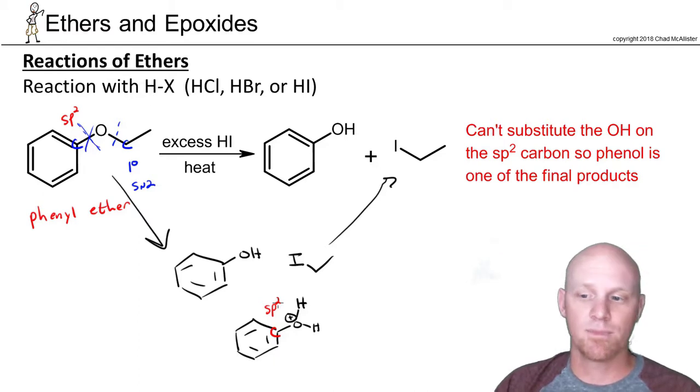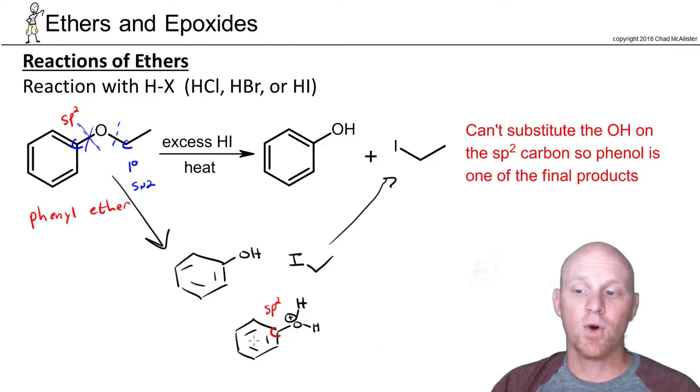And then backside attack is completely blocked from the reverse by the pi electrons in the benzene ring. So no SN1, no SN2. And so we're done. And that's why phenyl just plain old stays phenyl here.